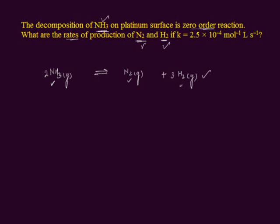The question asks what are the rates of production of nitrogen gas and hydrogen gas. Let us apply the average rate of reaction to this equation. The average rate of reaction is the change in concentration of reactants and products per unit time. We write: rate = D[NH₃(g)] / dT, where D represents change and NH₃ represents the concentration of the reactant. Similarly, we write the rate expression for the products nitrogen gas, D[N₂] / dT, and for hydrogen gas, D[H₂] / dT.